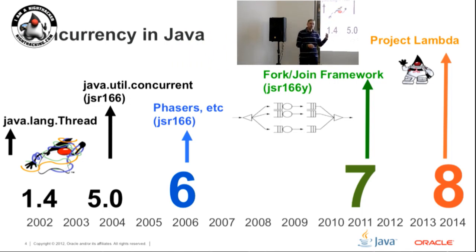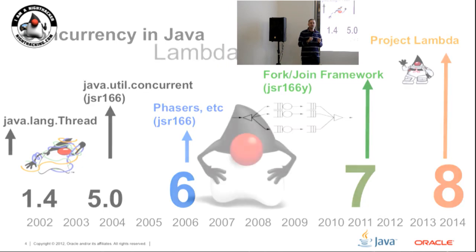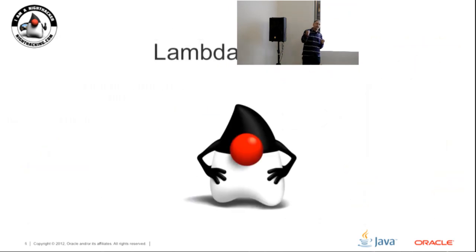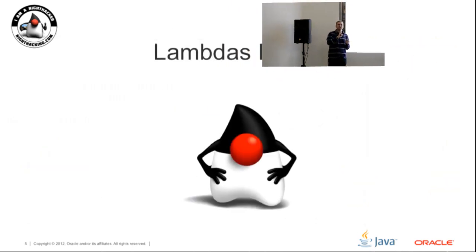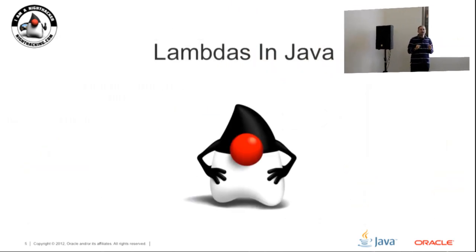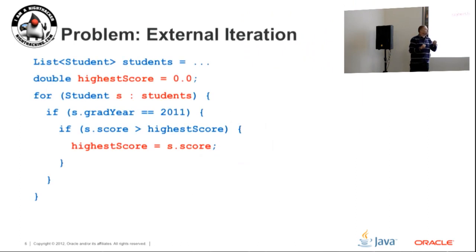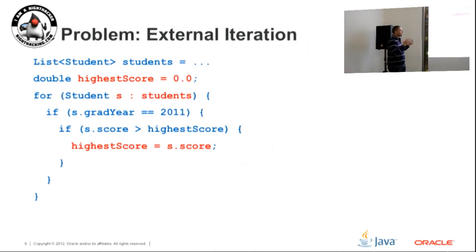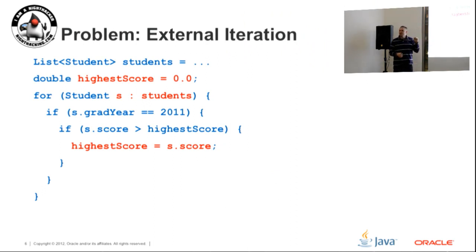So this is lambdas in Java - why do we need them and what's the reality? This is a very simple piece of Java code, the kind of thing we do a lot. We're taking a collection and we want to find something in that collection.